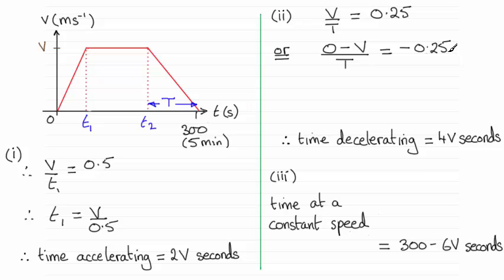So whether you use this or this, whatever you do, when you rearrange it for big T, big T is going to equal 4V. So the time decelerating will be equal to 4V seconds.